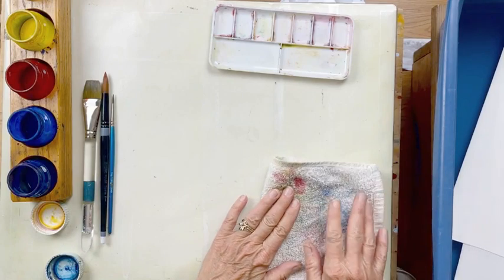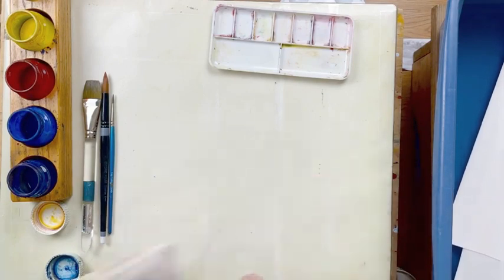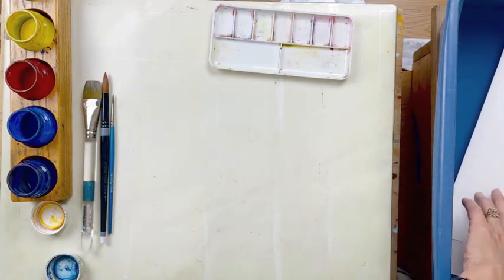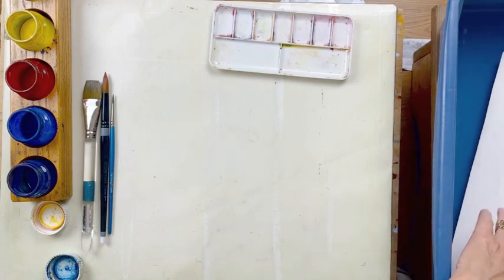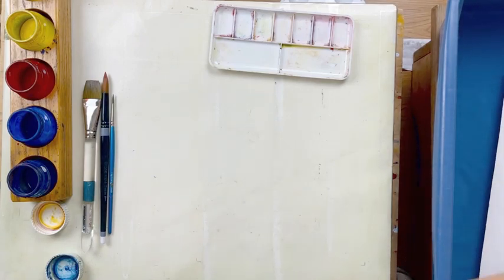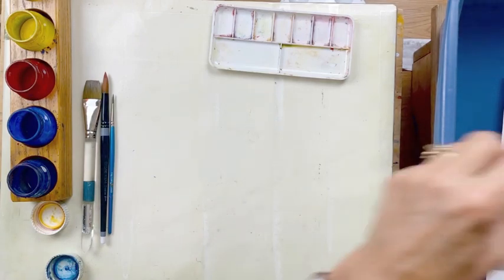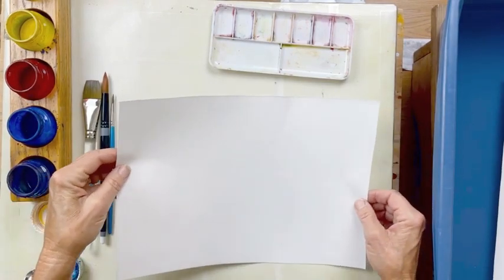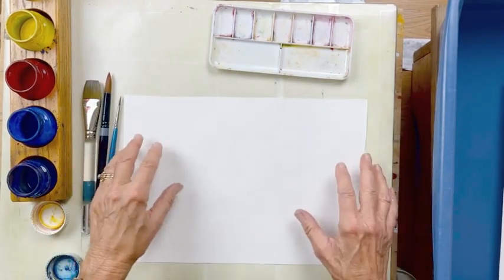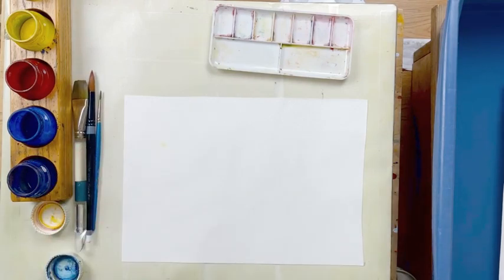You want to keep the drying cloth as clean as possible, because if you're going to be drying off a lot of different papers, you don't want to have a lot of paint on that cloth. This is the drying cloth, and so I'll gently lay it over my paper like this to dry it.